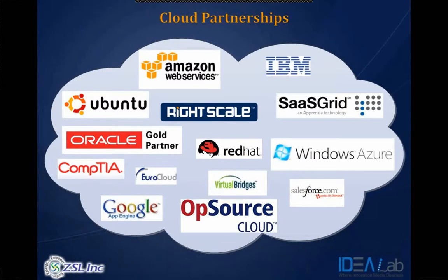VSL's cloud partnerships include Amazon, Ubuntu, Oracle, Google App Engine, Office 365, Salesforce, Azure, Rackspace, and IBM — with Rackspace, Amazon, IBM, and Microsoft being among the closest partners at gold and platinum partnership levels, providing access to their latest resources and technologies.